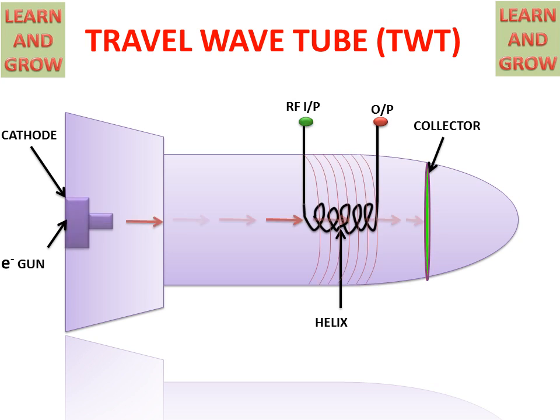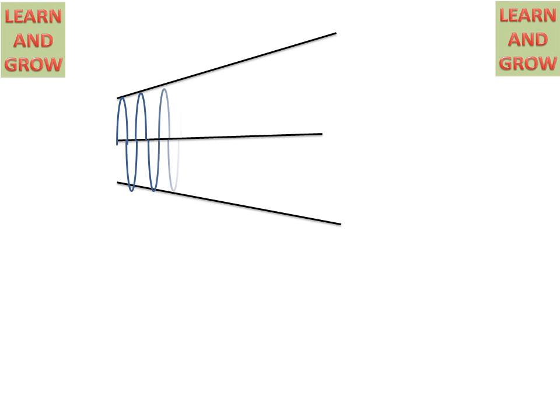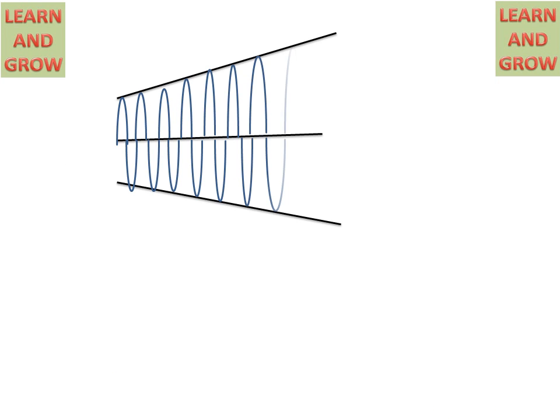We can take amplified output from the output port. The RF beam and the electron beam both have the same velocity, and the amplified output is obtained at the output. We get an amplified signal from the output.